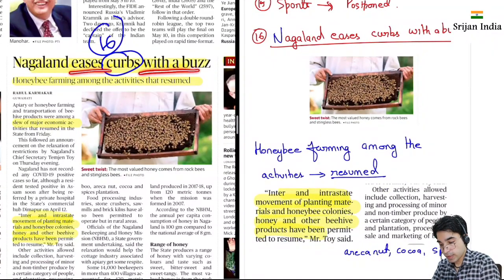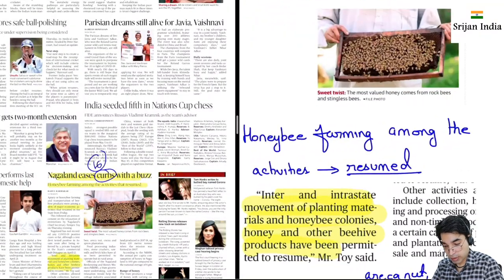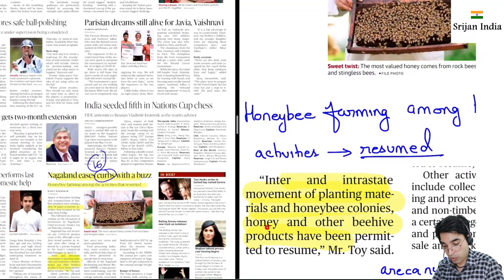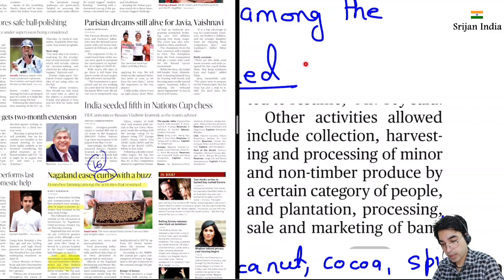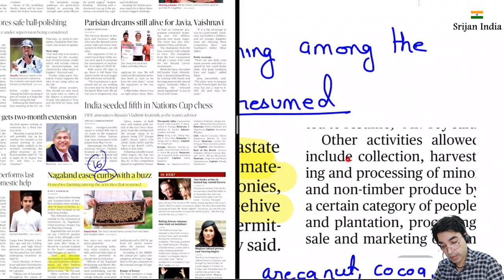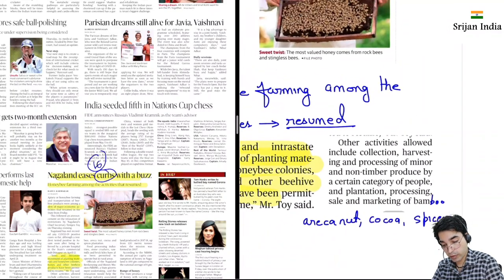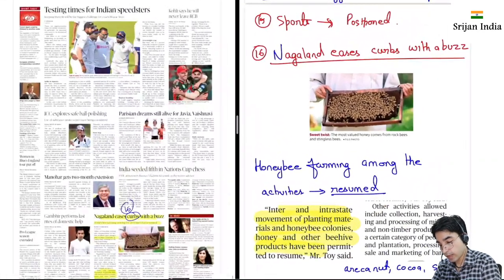Yeh Nagaland hai — yahan pe curbs ease kiye hain. Yeh kiya hai? Yeh most valued honey aata hai — yeh rock bee ya stingless bee se aata hai, sting nahi karti yeh, stingless bee. Honey bee farming — apiculture and all — resume ho gaya hai. Inter aur intra-state movement, planting material, honey bee colony, aur bee hive jisko madhumakhi ka jo chatta hota hai that is called bee hive — inke products ko permit kar diya hai resume karne ke liye. Other activities — yeh saari forest activities jaise humne minor forest produce and all padha tha — harvesting, processing of minor non-timber produce, plantation, processing, sale and marketing of bamboo and all. Arricanut, cocoa, spices — yeh saari activities abhi resume ho rahi hain.